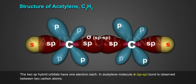In acetylene molecule, sigma sp-sp bond is observed between two carbon atoms.